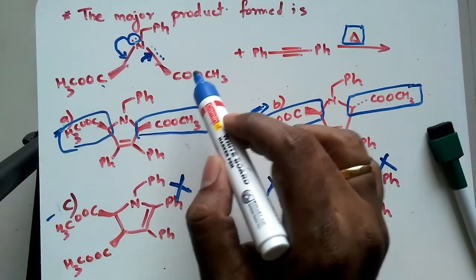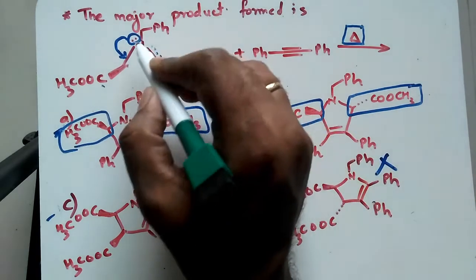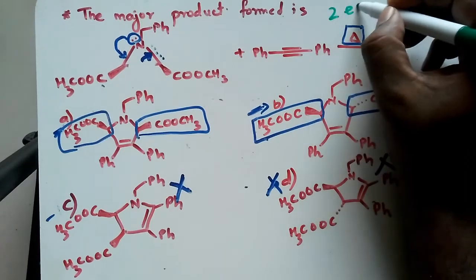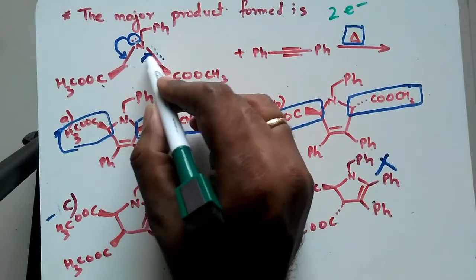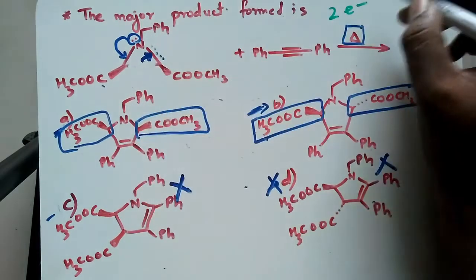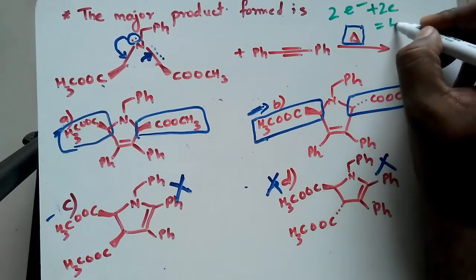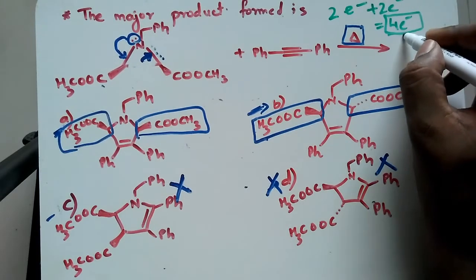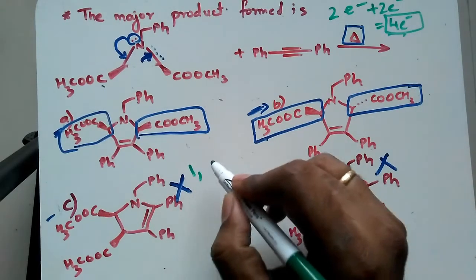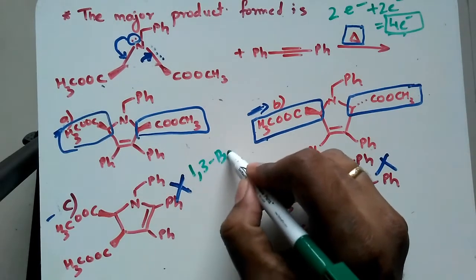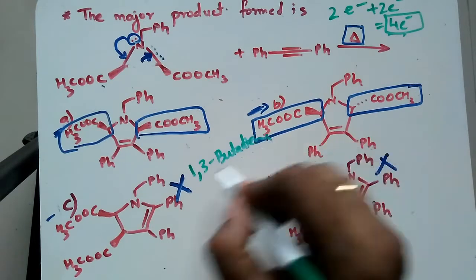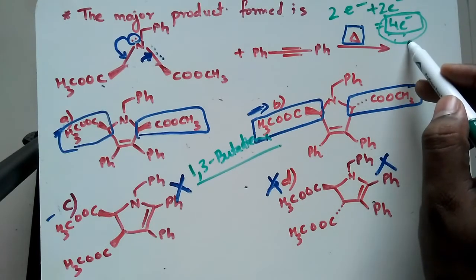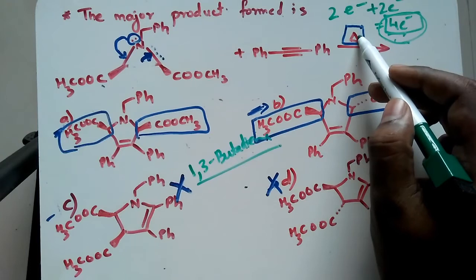We have two lone pairs of electrons — two electrons — and here one bond was breaking forming a bond, so another two electrons. That is equal to four electrons total. Whenever it's a system of four electrons, we always consider the HOMO of 1,3-butadiene. The total number of electrons participating is four, and the condition given is thermal.